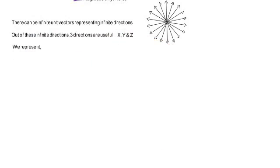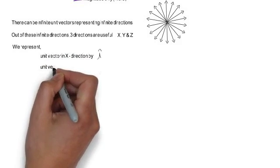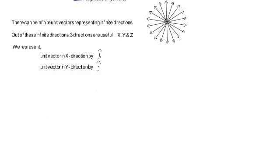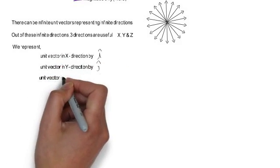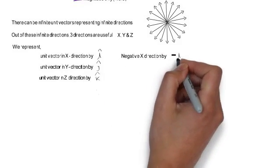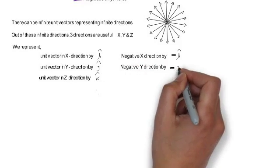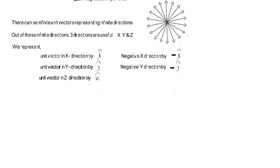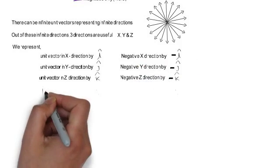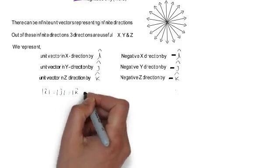We represent the unit vector in the x direction by i cap, the unit vector in the y direction by j cap, and the unit vector in the z direction by k cap. We can represent a unit vector in the negative x direction by minus i cap, in the negative y direction by minus j cap, and in the negative z direction by minus k cap. Remember that i cap, j cap, and k cap are all unit vectors whose magnitude will always be 1.